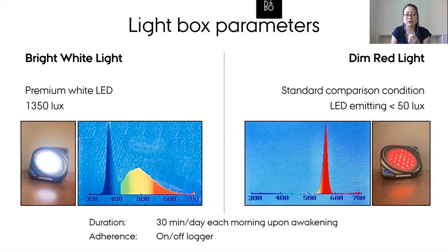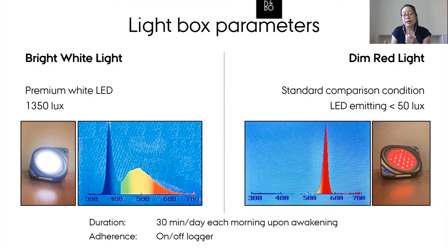The most important factor is the parameters of light. Peak sensitivity of those cells in the eye is in the blue light range, and those cells project to the master clock in the brain. We want light that peaks in the blue light range — bright white broad-spectrum light has a peak there. We typically use a standard comparison condition such as red light, which is a longer-wavelength light.